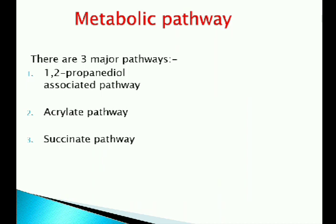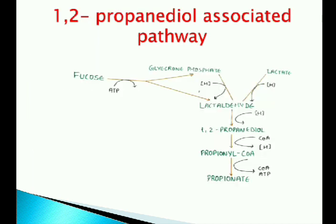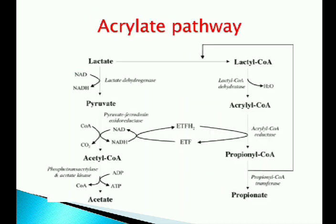There are three main fermentation metabolic pathways: the 1,2-Propanediol associated pathway, the acrylate pathway, and the succinate pathway. In the 1,2-Propanediol associated pathway, bacteria such as Salmonella typhimurium and Roseburia inulinivorans are known to perform this process. The entry point is directly through sugars such as fucose, glycosidic intermediates, glycerone phosphate or lactate. The acrylate pathway enables ATP-neutral conversion of lactate to propionate with the consumption of NADH.